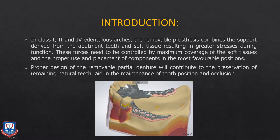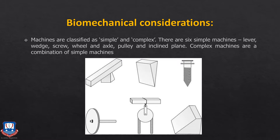In Class 1, Class 2, and Class 4 edentulous arches, RPDs combine the support derived from abutment teeth as well as soft tissues, resulting in greater stress during function. These forces need to be controlled to maximize coverage over the soft tissues and to properly place components so that stress or torque is not created on the abutment teeth. Proper RPD design contributes to the preservation of the remaining natural teeth and aids in maintaining tooth position and stability of the prosthesis.